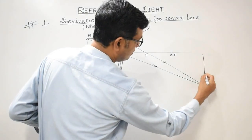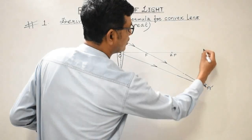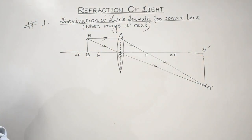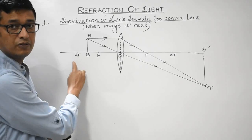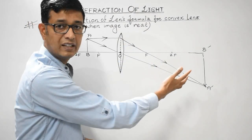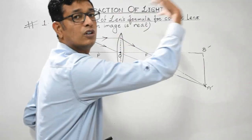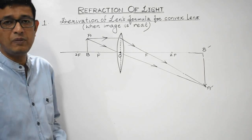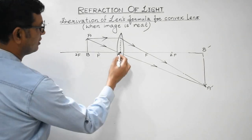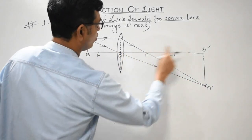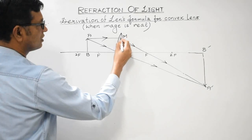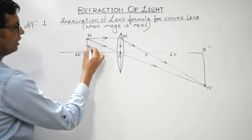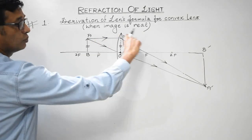We drop a perpendicular and this is the inverted enlarged image obtained, A'B'. Whenever the object is placed between F and 2F, its real, inverted, enlarged image is obtained beyond 2F. Let's name the points: this is AOB, this one is A'OB'. And let us consider this point to be M. Obviously OM should be equal to AB, these two being parallel lines.